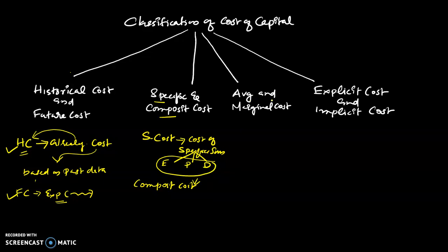Then we have average and marginal cost. Average cost of capital refers to the weighted average cost of capital calculated on the basis of cost of each source of capital and the weight assigned to them in the ratio of their share to total capital fund. We can raise capital from different sources — equity, preference shares, or debentures — in different proportions.